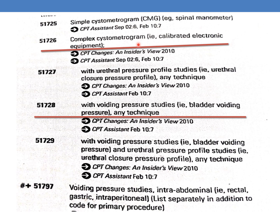So you need to look for complex cystometrogram. Under that, you can find some further additions. The question specifies complex cystometrogram with voiding pressure studies. Note that some descriptions start with a small letter, which indicates the description is not complete — you have to go up to find the code where the description starts with a capital letter. So 51728 is complex cystometrogram with voiding pressure studies, any technique — for example, bladder voiding pressure. Since complex cystometrogram is performed with voiding pressure studies, the first CPT is 51728.